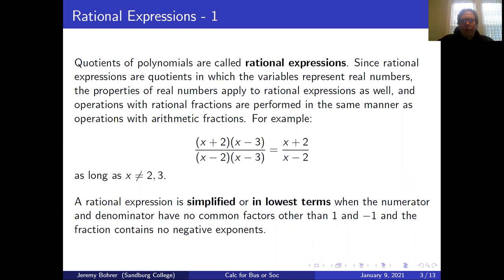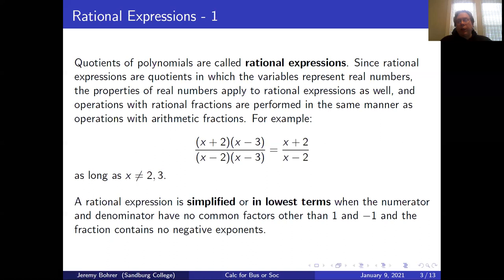Quotients of polynomials are called rational expressions. Since rational expressions are quotients in which the variables represent real numbers, the properties of real numbers apply to rational expressions as well. Operations with rational fractions are performed in the same manner as operations with arithmetic fractions. For example, (x+2)(x-3) over (x-2)(x-3) equals (x+2) over (x-2). We've just canceled those (x-3) factors, as long as x does not equal 2 or 3, since then we would be dividing by zero. A rational expression is simplified or in lowest terms when the numerator and denominator have no common factors other than 1 and negative 1, and the fraction contains no negative exponents.